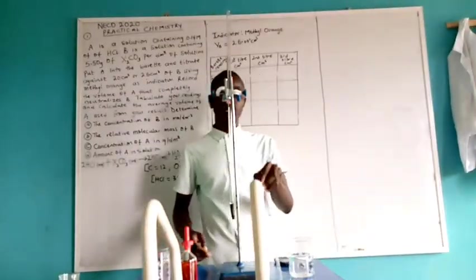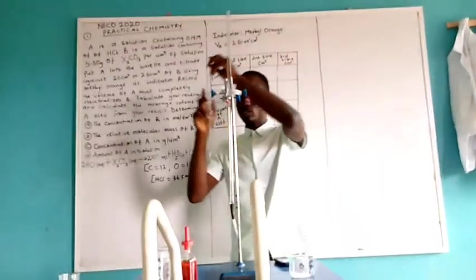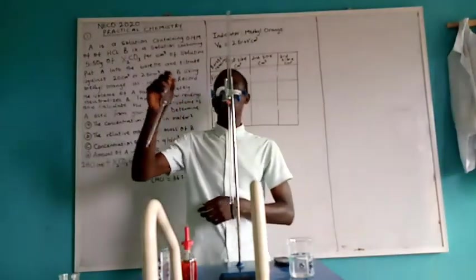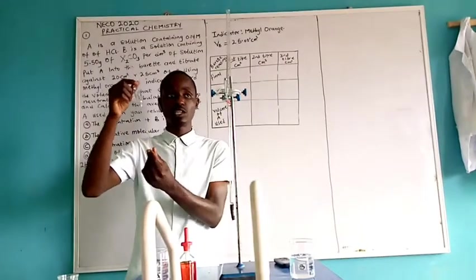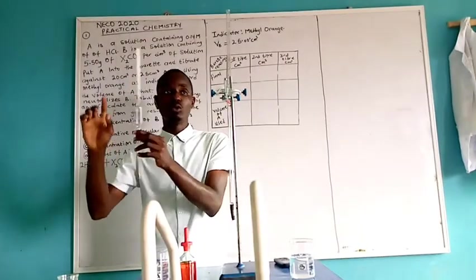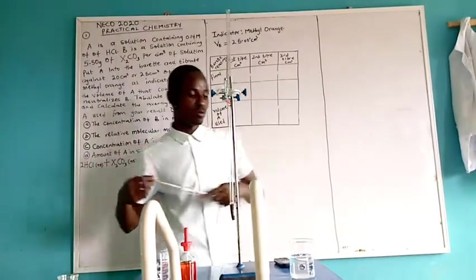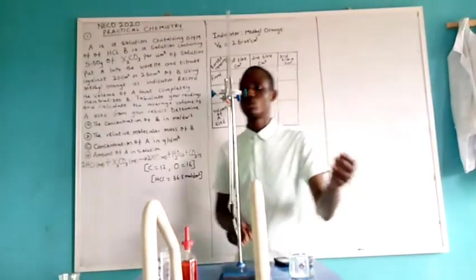Secondly, when you draw the pipette, you don't blow it. Immediately the pipette is discharging the contents, don't blow it because it is designed to discharge a fixed volume. By blowing it, you have increased the volume.